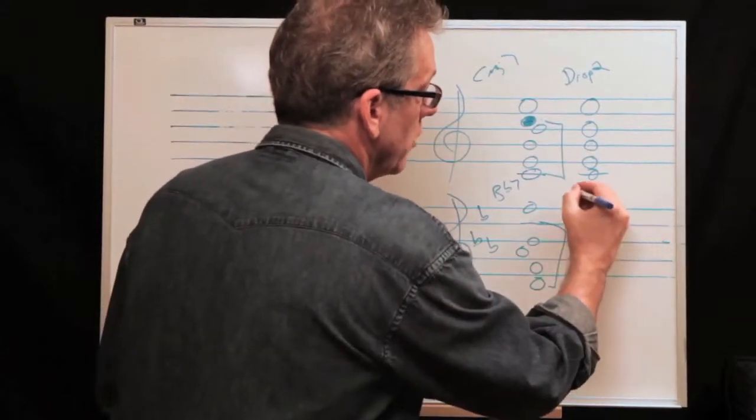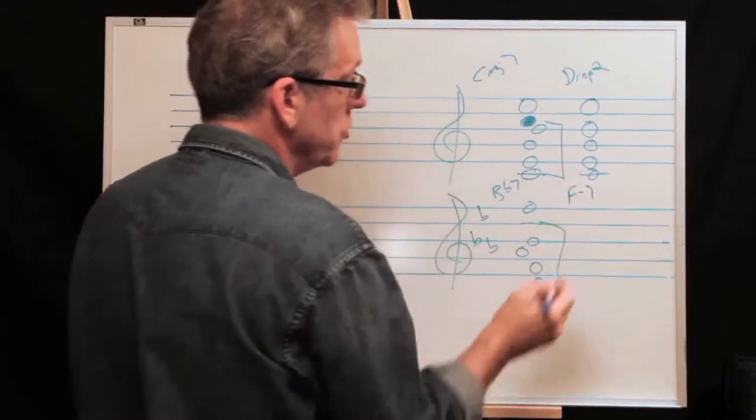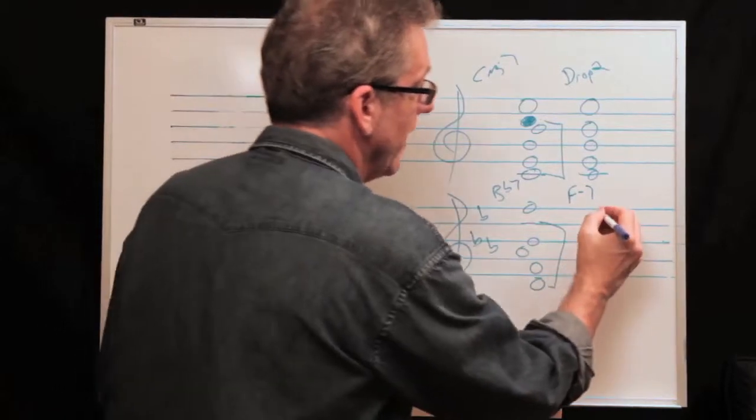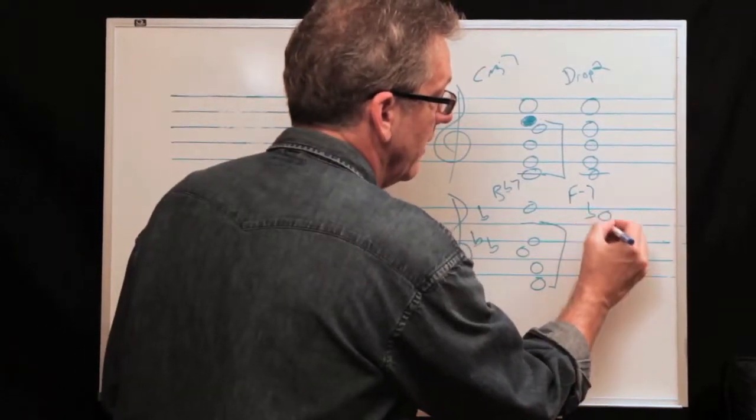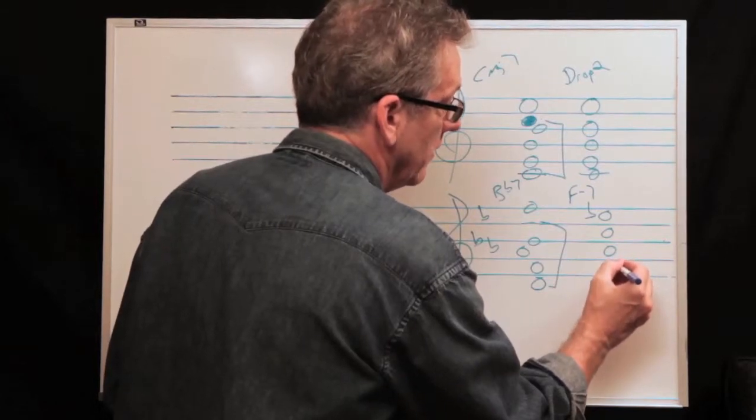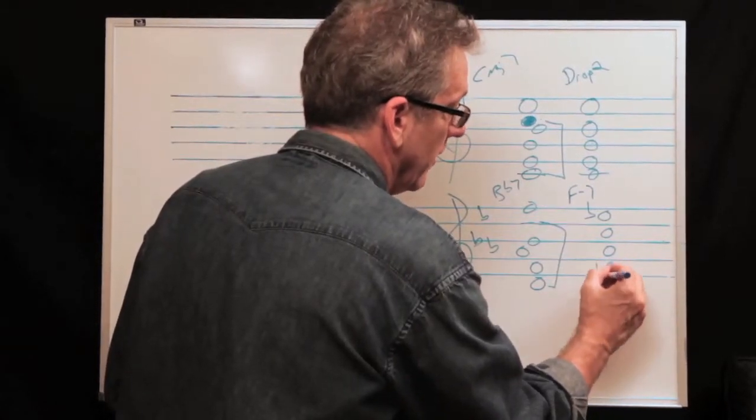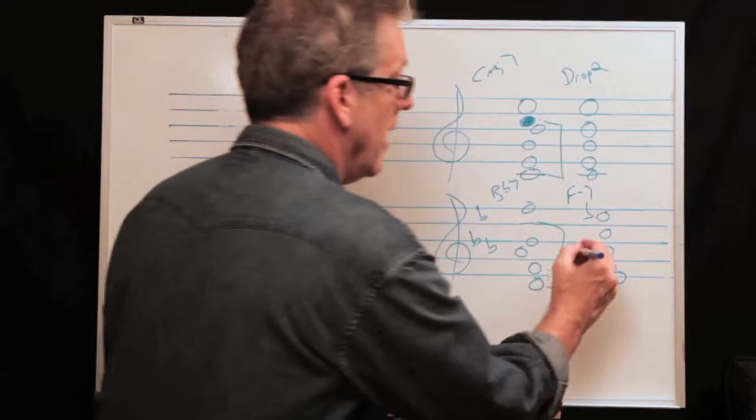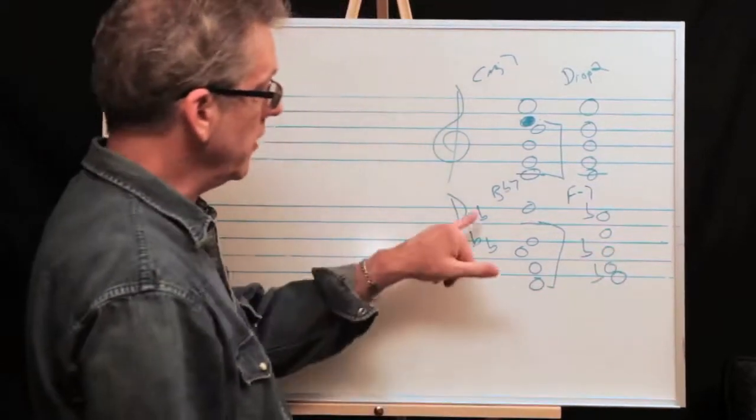So there, there it is for drop, drop two. Let's do a minor chord. Let's do F minor, which is also the two chord in E flat. So we're still in E flat. And let's say the top note is E flat. And we got a C, A flat, F and E flat down here. Okay. And an A flat.